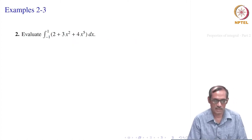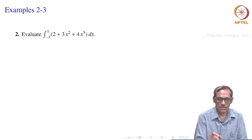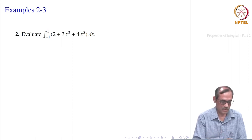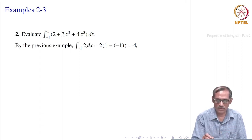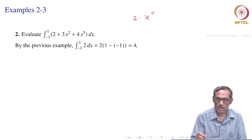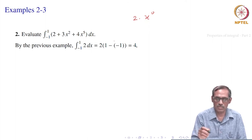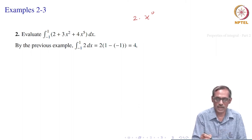Let us check another example: evaluate ∫₋₁¹ (2 + 3x² + 4x⁵) dx. We apply the previous result under our properties. First, the integral of the constant 2: ∫₋₁¹ 2 dx = 2·(1 − (−1)) = 2·2 = 4.